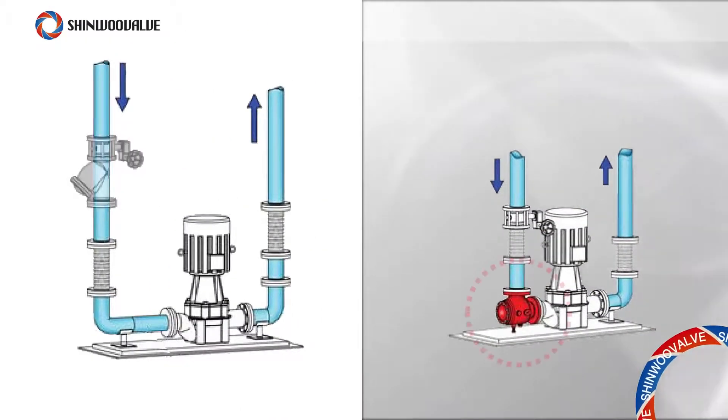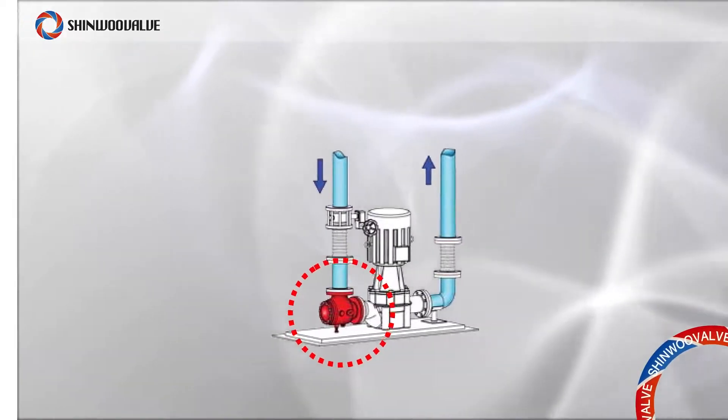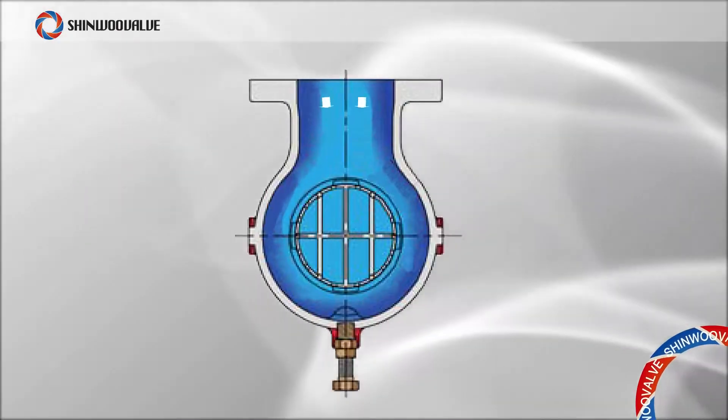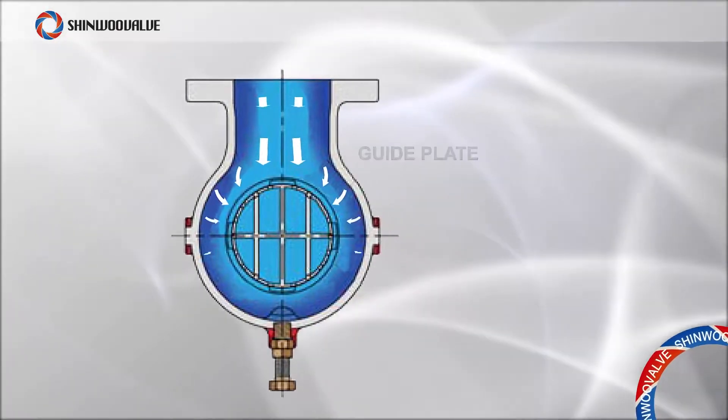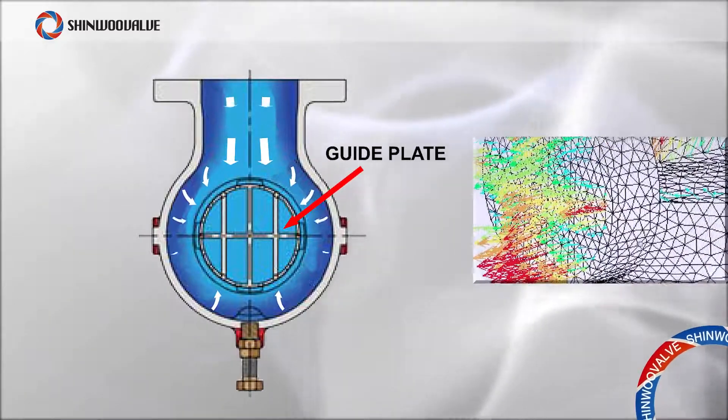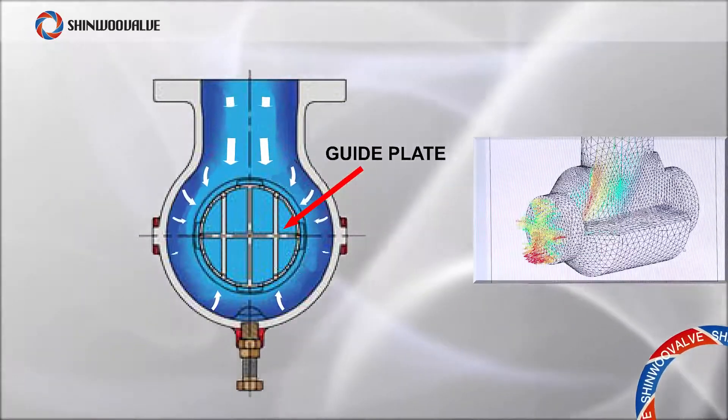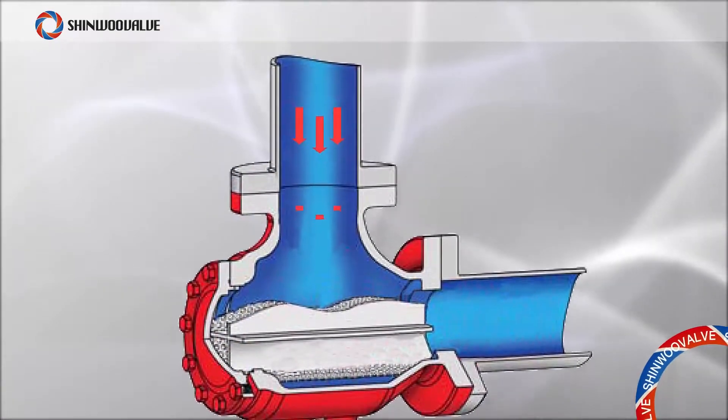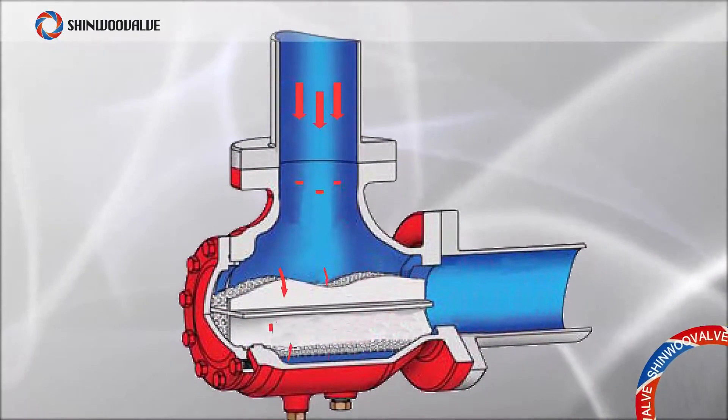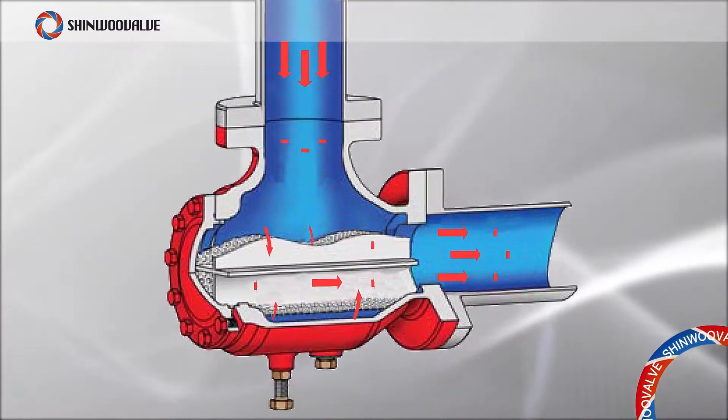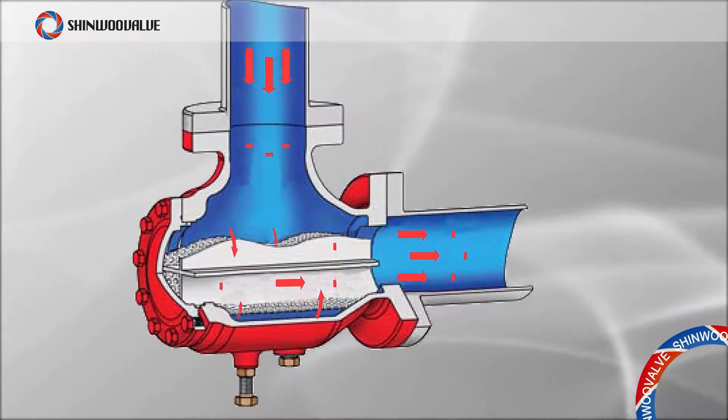A suction diffuser installed at the inlet of a pump has been redesigned by Shinoo Valve to reduce the installation area to only one-third of the traditional design. Its internal guide plate not only induces stable fluid flow but also protects the pump impeller by preventing cavitation. This unique design further enhances durability by coming equipped with a screen that collects and prevents foreign substances from flowing into the pipe.